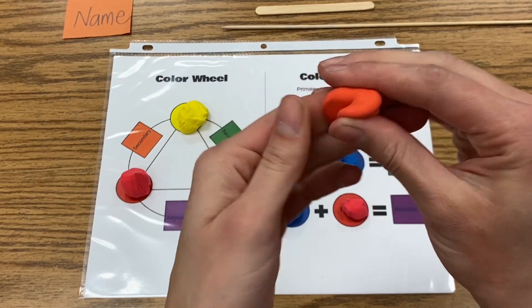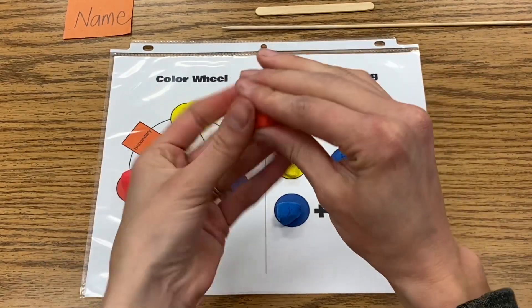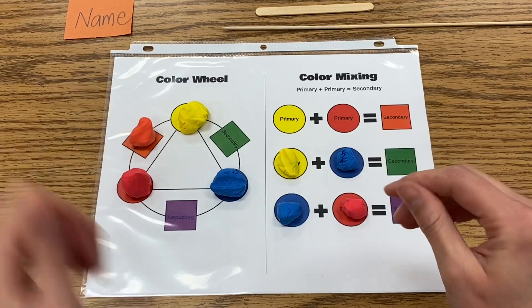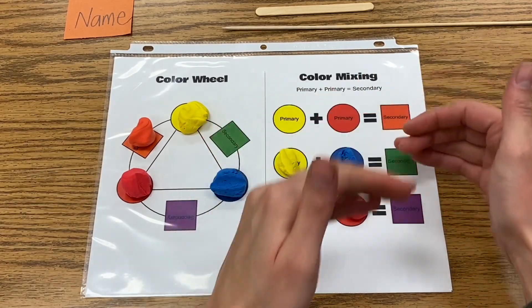When you have mixed up your first secondary color, it's up to you—you can put it here. I'm going to put it over here on my color wheel with my other ones.